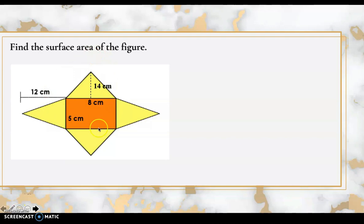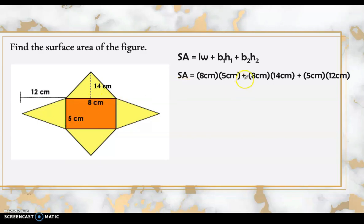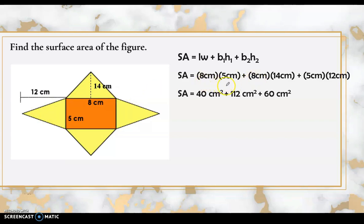Now find the surface area of this rectangular pyramid. Using the formula SA = lw + b₁h₁ + b₂h₂: the length is 8 cm, width is 5 cm, the height of the first pair of triangles is 14 cm, and the height of the second pair is 12 cm. So: (8 × 5) + (8 × 14) + (5 × 12) = 40 + 112 + 60 = 212 square centimeters.